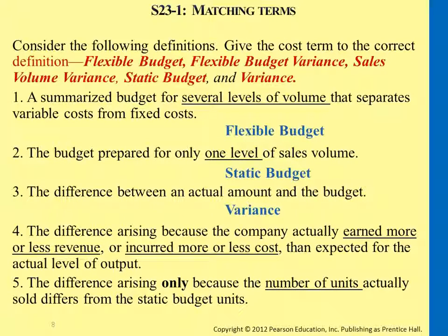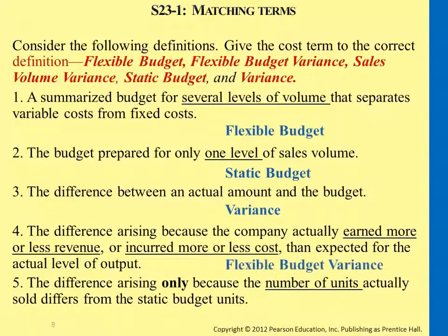Sales volume variance — variance is for which one? The fourth one. The fourth one is harder; the definition is more complicated: flexible budget variance. But if you don't know the fourth one, the fifth one is just based on the number of units difference. So this obviously is the volume differences.